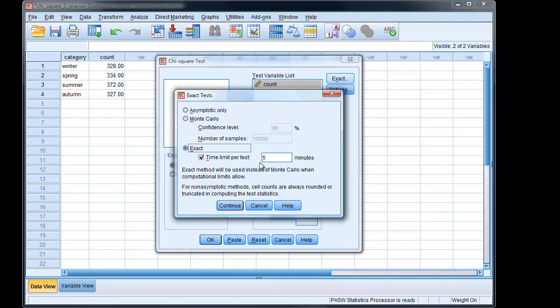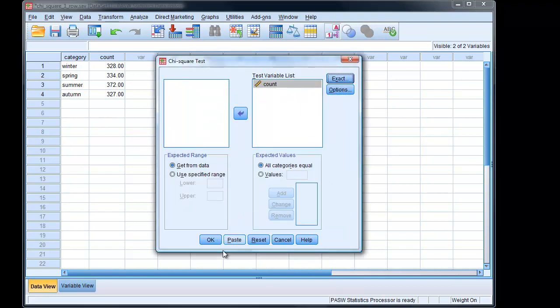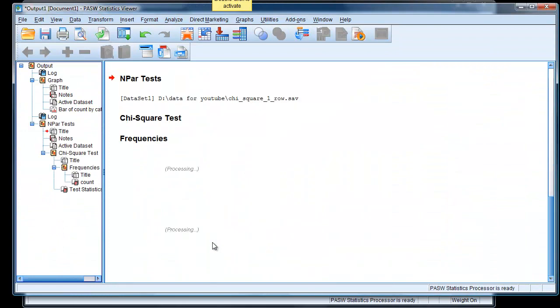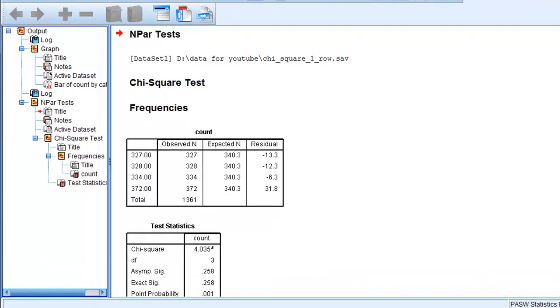Interestingly enough, you don't really know if you want the exact value or the equivalent Monte Carlo value, if there's very large sample size, until you've actually run the test and discovered that one or two of the expected cells are less than five. So it's a bit of a chicken and egg situation. Continue.